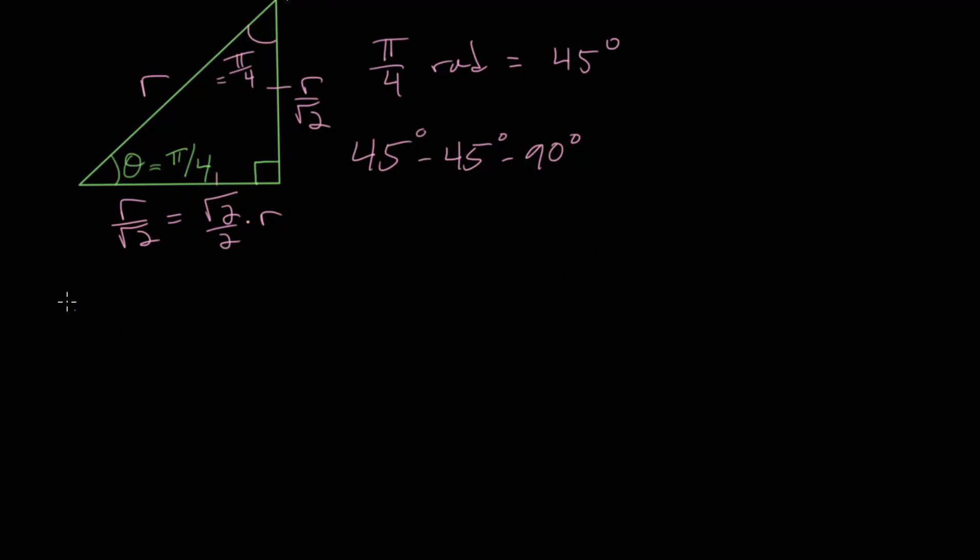Now applying our trig function definitions, we can look at the sine first. The sine of pi over 4 would be the opposite divided by the hypotenuse. We have root 2 over 2r divided by r, and the r's cancel out, and we get the square root of 2 over 2.